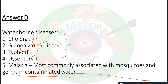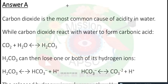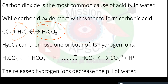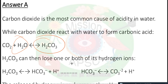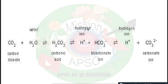Next question: The most common cause of acidity in water is — carbon dioxide, oxygen, hydrogen, or nitrogen? Carbon dioxide is the most common cause of acidity. Carbon dioxide reacts with water to form carbonic acid (H₂CO₃), and carbonic acid releases hydrogen ions (H⁺). This increases H⁺ ions, which decreases the pH value, thereby increasing acidity. So carbon dioxide is the most common factor causing acidity in water.